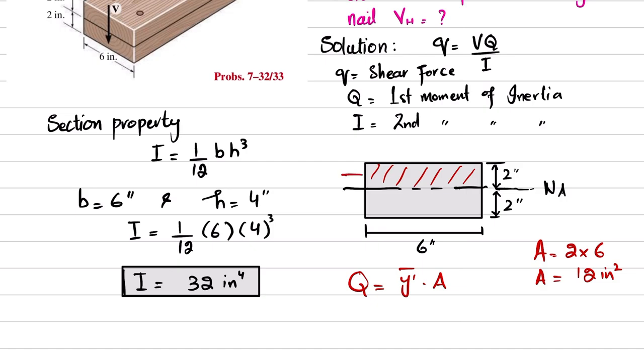What is y-bar? Y-bar is the distance from neutral axis to the mid of this area. So y-bar is equal to two divided by two, which equals one inch. Now you have both values: A is 12 and y-bar is 1, so Q will also equal 12 inches cubed.